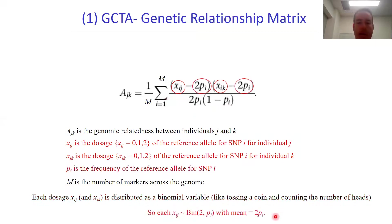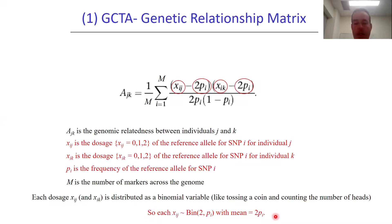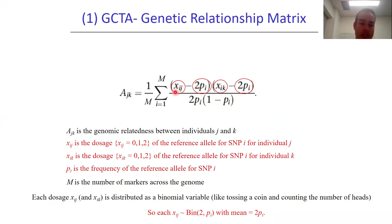From first-year statistics, when you have a binomial variable, the mean or expected value is equal to the number of trials multiplied by the probability of success for each trial. Here we've got two alleles, and the probability of success PI is the frequency of the reference allele for SNP i. So the mean is going to be 2 times PI. Essentially, you're taking an individual's dosage and subtracting that mean value from it.